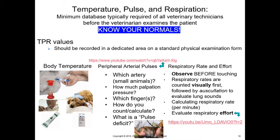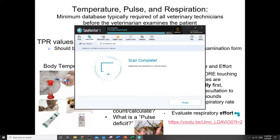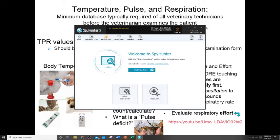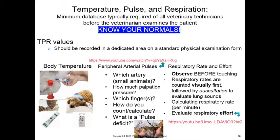Respiratory rate and effort: observe before you even touch the animal. Respiratory rates are usually counted visually first, followed by auscultation — that means listening to lung sounds throughout the chest. You calculate both pulse and respiratory rate per minute. Typically we count for six to ten seconds and then calculate. You should know your normals for respiratory rate.